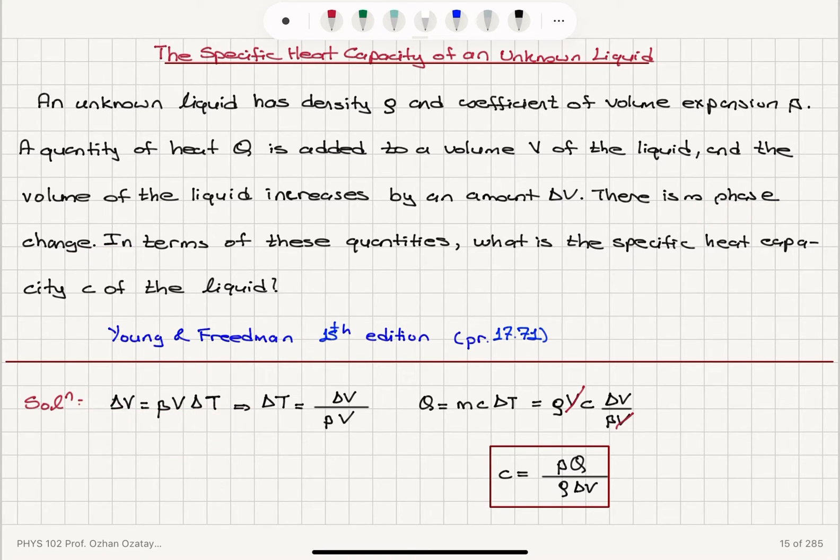So ΔV is βVΔT. That's the amount of increase in the volume due to thermal expansion. So ΔT can be written as ΔV over βV. The mass of the liquid is its density times the volume, ρ times V. So the amount of heat added, because there is no phase change, is mcΔT.